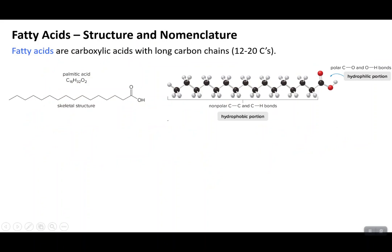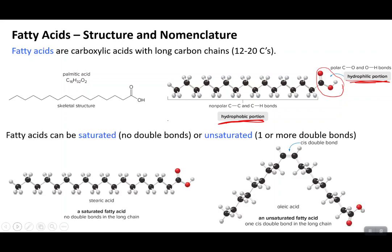Fatty acids are carboxylic acids with long carbon chains. This means a fatty acid has a hydrophilic portion — the carboxylic acid group with its electronegative oxygen — and a hydrophobic tail, which is all carbons and hydrogens. Fatty acids can either be saturated, meaning they have no double bonds, or unsaturated, where there is at least one double bond. The double bonds in naturally occurring fatty acids are in the cis configuration.